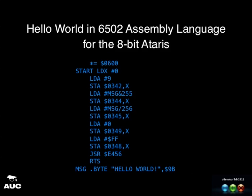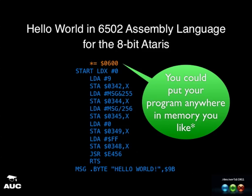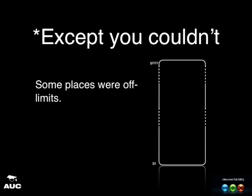Here's Hello World in 6502 assembly language for the 8-bit Atari. The way this program works is that at address hex 340 — the dollar sign denotes a hexadecimal number — there lived a thing called an I/O control block. We populate that I/O control block with the information necessary to send our Hello World message to the screen, and at the bottom we jump into a ROM routine located near the top of memory, which performs the I/O operation. The top line is a directive to the assembler telling it where in memory your program code should go.